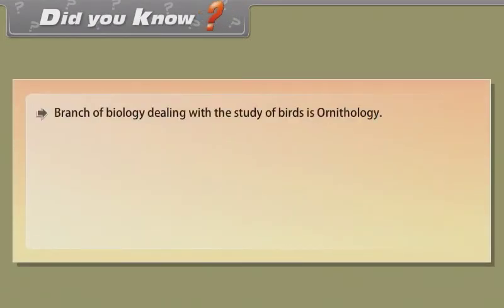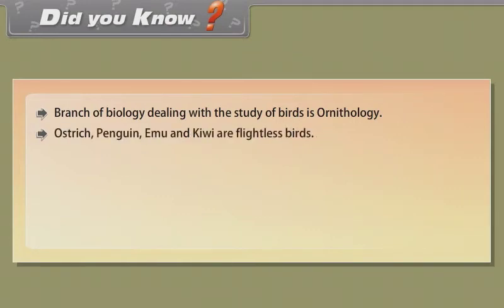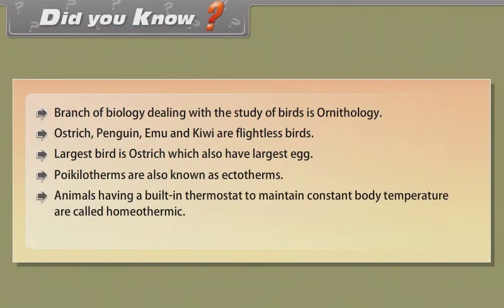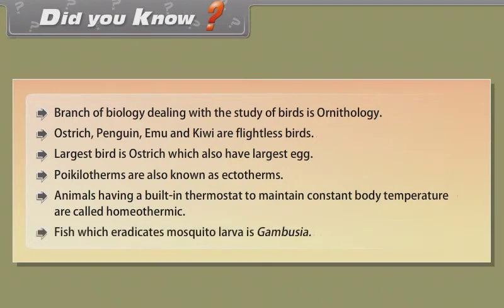Did you know? The branch of biology dealing with the study of birds is Ornithology. Ostrich, penguin, emu and kiwi are flightless birds. The largest bird is the ostrich, which also has the largest egg. Poikilotherms are also known as ectotherms. Animals having a built-in thermostat to maintain constant body temperature are called homeothermic. The fish which eradicates mosquito larvae is Gambusia.